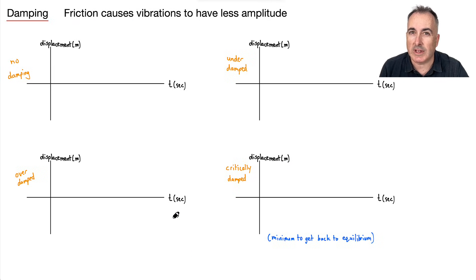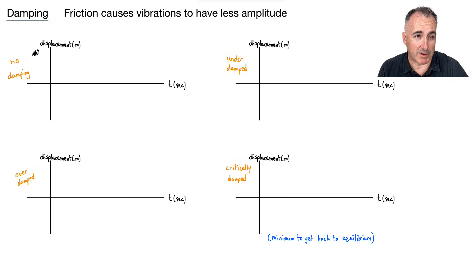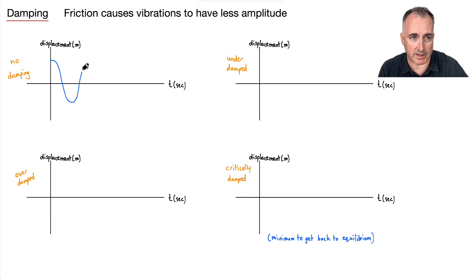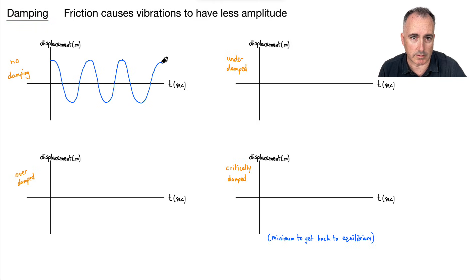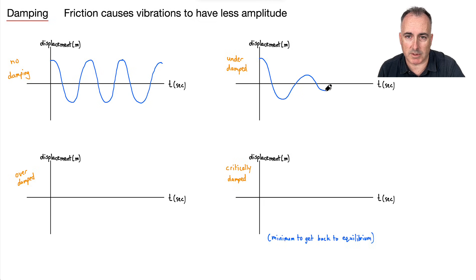So let's talk about damping now. In real-life situations, friction causes vibrations to have less amplitude — it's not a perfect world. If we have no damping, then an oscillation just keeps oscillating — it just goes like this, then like this, then like this. It keeps going up and down with no difference in amplitude; it's just constant. What about underdamped? That means it's damped, so maybe the amplitude is less, then less, then less — until it stops. That could be underdamped.